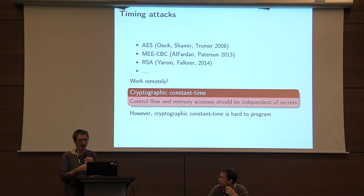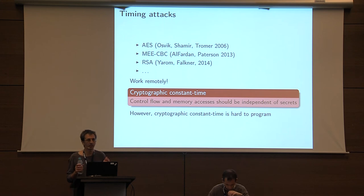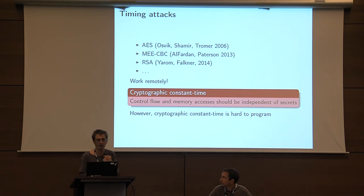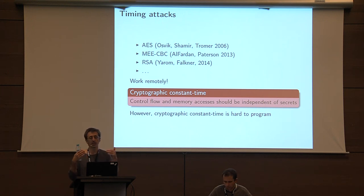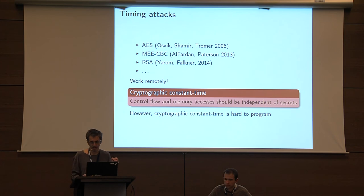Let me turn to the second part: side channels. We've been doing two lines of work: one on constant time cryptography and one on masked implementation. There's a well-known fact that when you want to break crypto, you don't try to break the math — you try the implementation. There's plenty of evidence that timing attacks can be a disaster, helping recover the key and working more or less remotely. The gold standard for avoiding cache-based timing attacks is constant-time cryptography, which suggests that control flow and memory access should be independent of secrets.